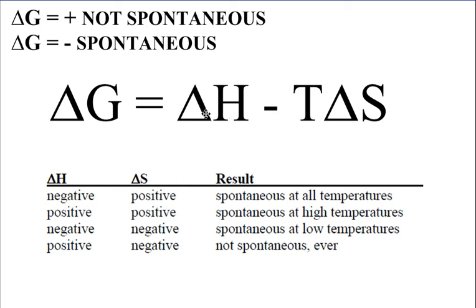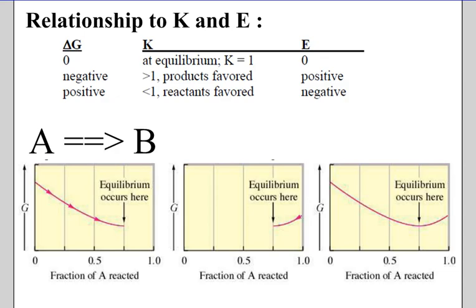And lastly, if delta H is positive and delta S is negative, we will never be spontaneous, because that's always going to come out to be positive. If we look at free energy and its relationship to equilibrium and electromotive force E, anytime we're at equilibrium, so K is going to equal zero, our delta G is going to be zero. And since we're at equilibrium, that means the battery is dead, so our electrostatic potential is also going to be zero.